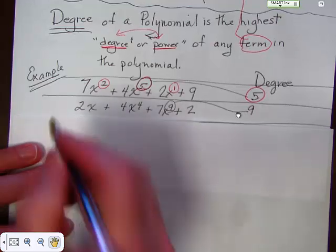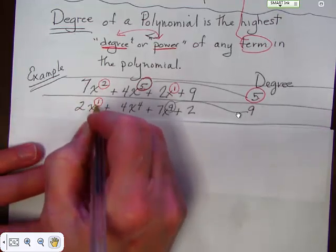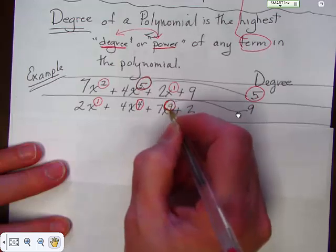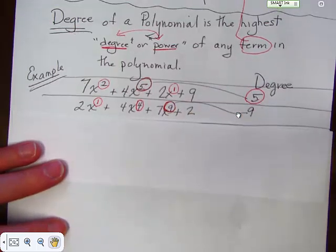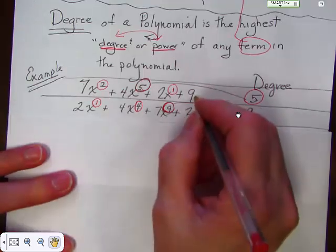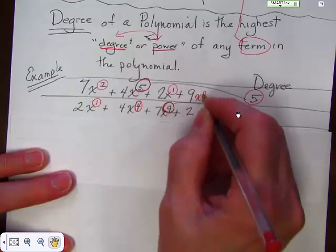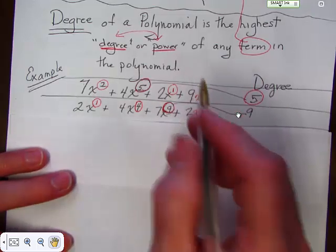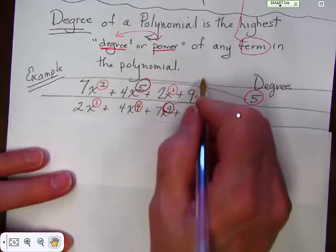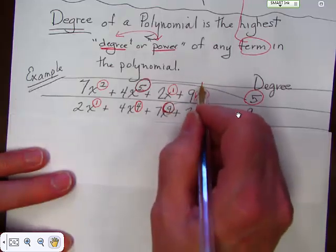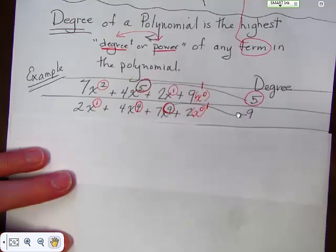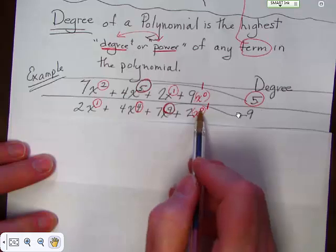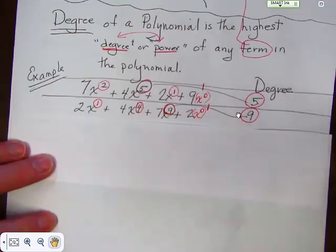We have another one here. We have 2x and of course we consider that the first degree. 4x to the fourth power. 7x to the ninth power. And then we have 2. Technically I'm going to tell you this and I hope it doesn't confuse you. But here, this is really x to the zero power. And this is also x to the zero power. Because we know that any number at all to the zero power is 1. So this is really just saying 9 times 1. And this is saying 2 times 1. So, going back to the power. The highest power. We've got a power of 1, 4, 9, and 0. 9 is the highest power. So the degree of this polynomial is 9.